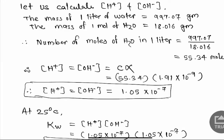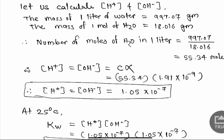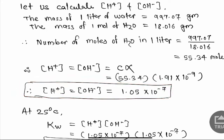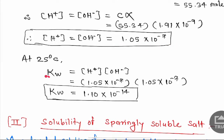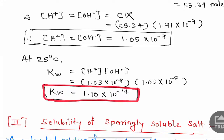Since water is a weak electrolyte, it cannot dissociate completely — only a fraction will dissociate. Therefore the concentration is C × α, giving the exact concentration. Performing this multiplication, [H⁺] = [OH⁻] = 1.05 × 10⁻⁷ mol/L. Putting this into the ionic product equation: Kw = 1.05 × 10⁻⁷ × 1.05 × 10⁻⁷ = 1.1 × 10⁻¹⁴.